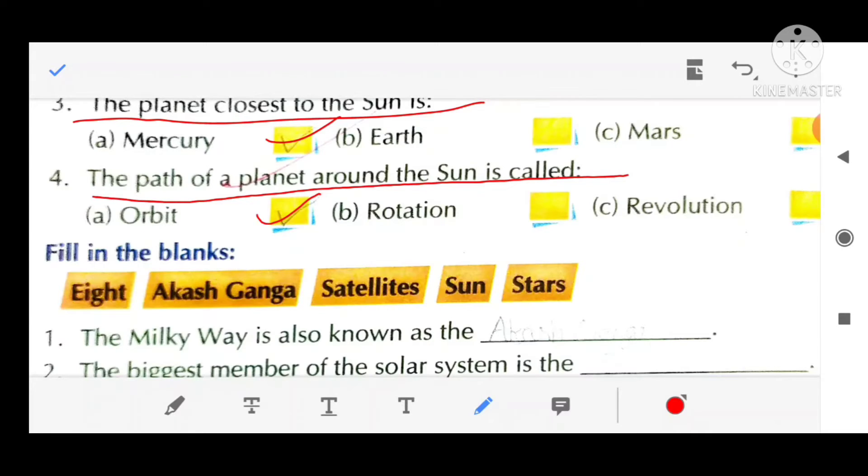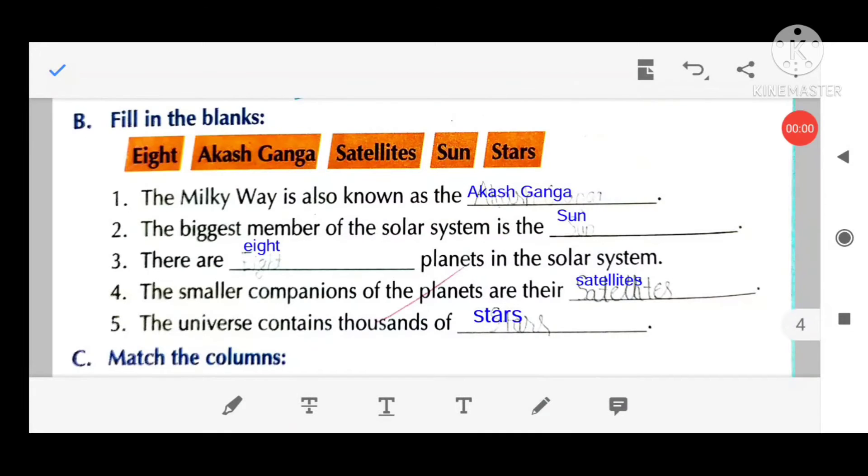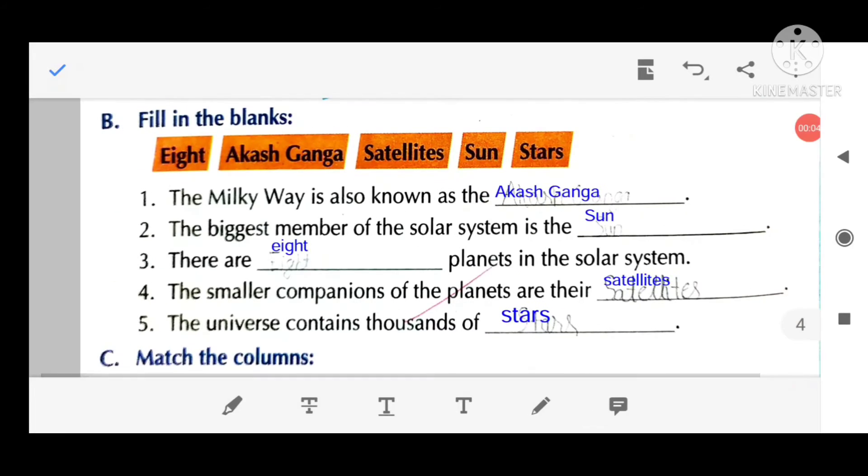The Milky Way is also known as the Akash Ganga. Second, the biggest member of the solar system is the sun.